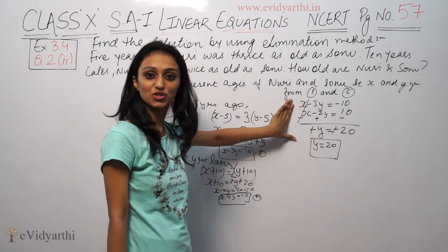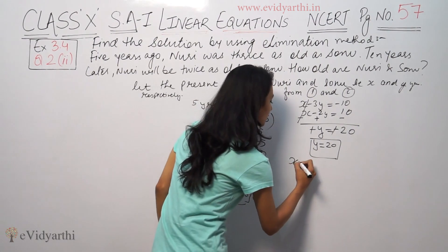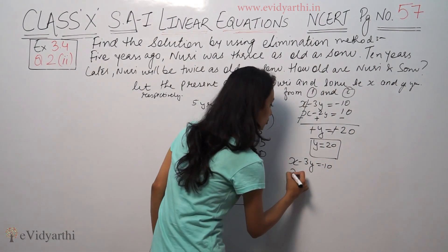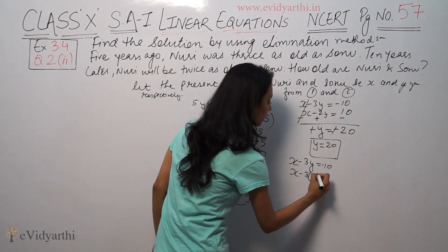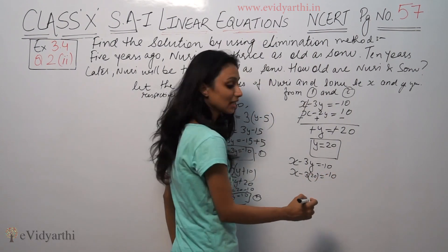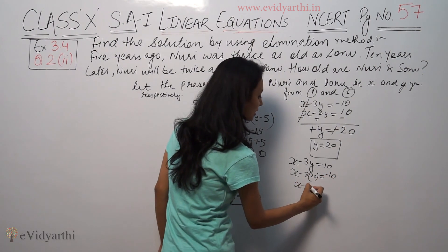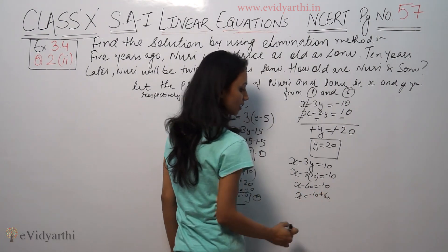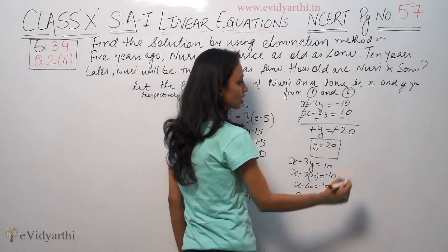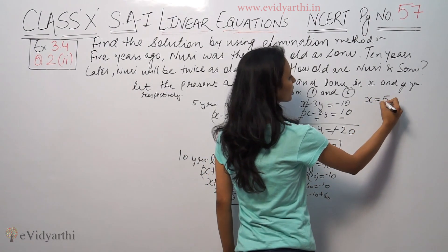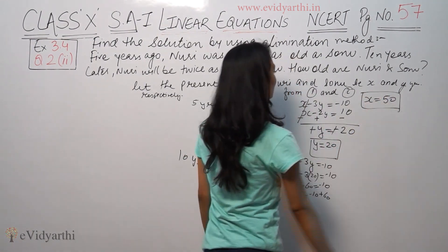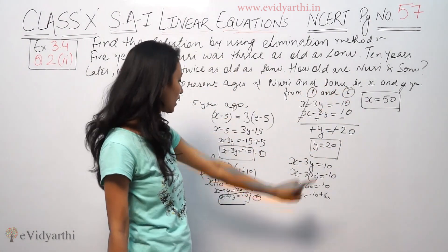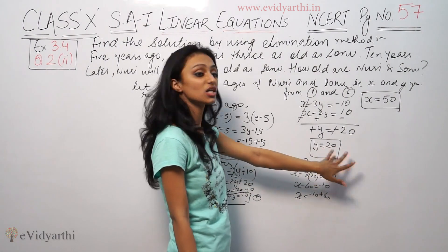Now substituting y equals 20 into the first equation: x minus 3y is equal to minus 10. x minus 3 times 20 equals minus 10. x minus 60 equals minus 10. Therefore x is equal to minus 10 plus 60, so x is equal to 50.